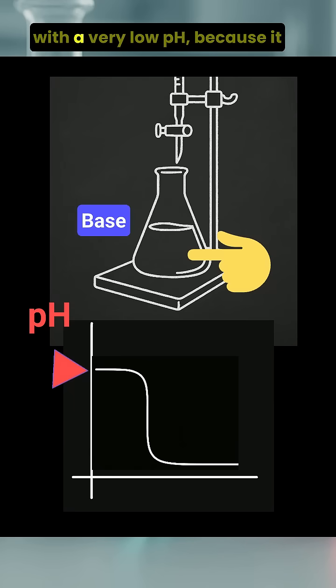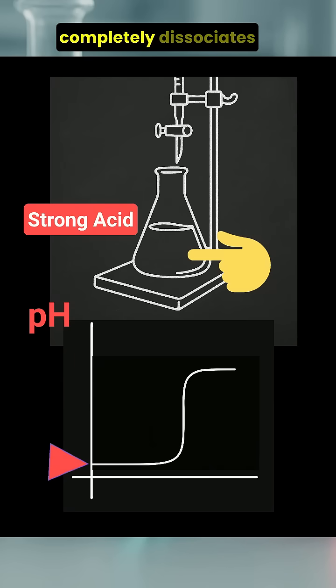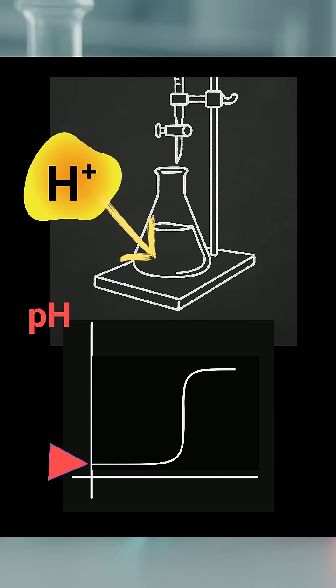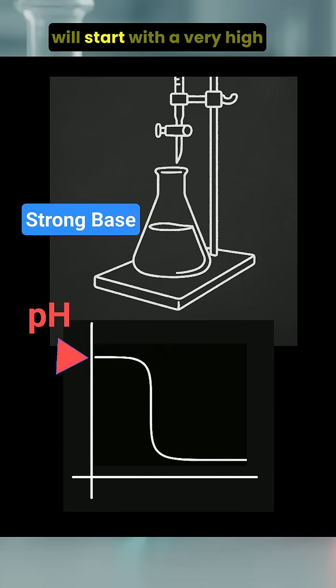A strong acid will start with a very low pH because it completely dissociates in water, producing a high concentration of H plus ions. Conversely, a strong base will start with a very high pH, due to the high concentration of OH minus ions, or hydroxide ions.